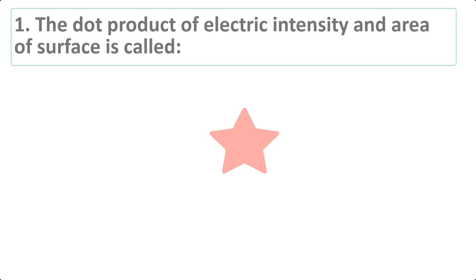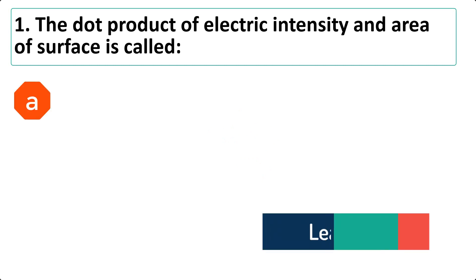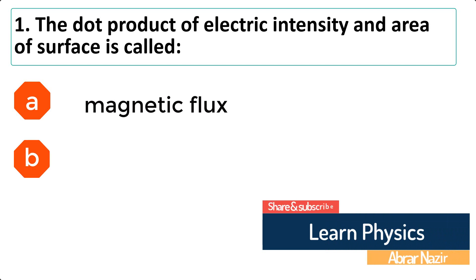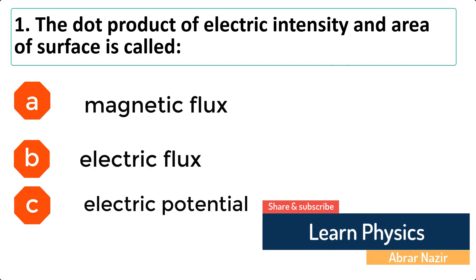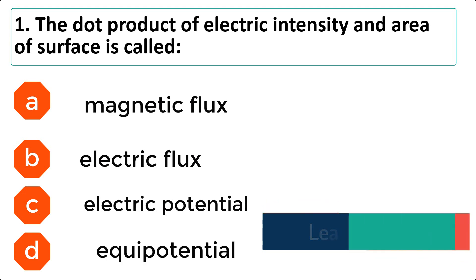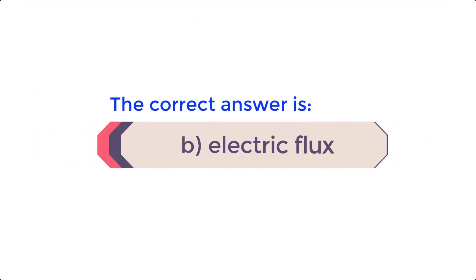The dot product of electric intensity and area of surface is called: A. Magnetic flux. B. Electric flux. C. Electric potential. D. Equipotential. The correct answer is B. Electric flux.